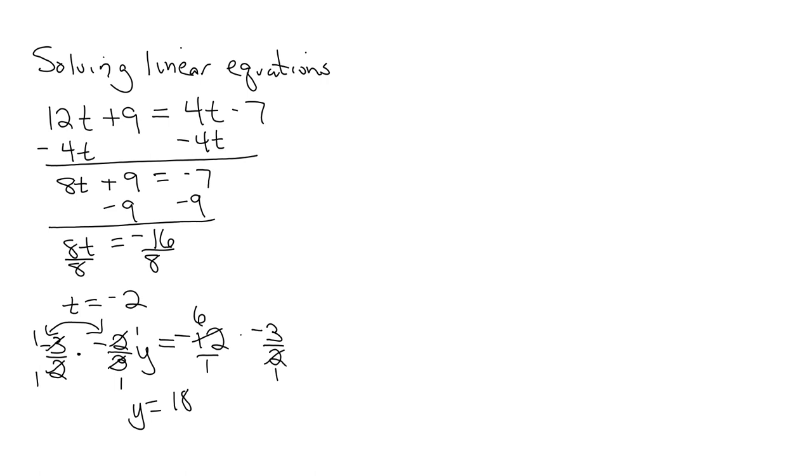So another one with a little more meat to it. Ready for this. 5 times the quantity u minus 1 minus the quantity u minus 2 is equal to 10 minus the quantity 2u plus 1. Now it looks daunting, but we're going to bring it down very quickly.